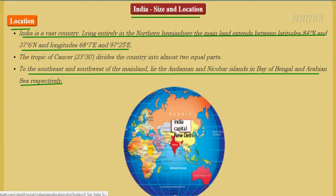The Tropic of Cancer divides the country into almost two equal parts. To the southeast and southwest of the mainland lie the Andaman and Nicobar Islands, in the Bay of Bengal and Arabian Sea respectively.